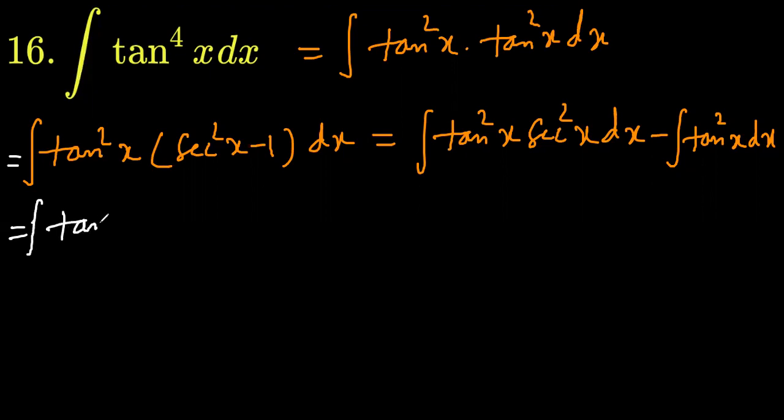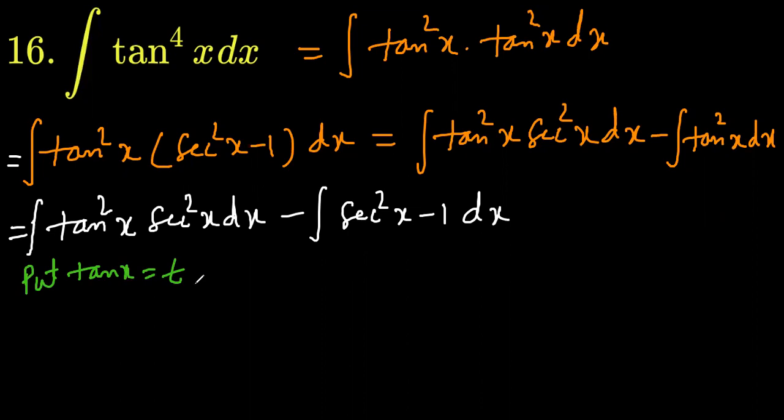tan squared x sec squared x dx minus integration of sec squared x minus 1 dx. Tan x is equal to t. The derivative of tan is sec squared x. Sec squared x dx should be dt.